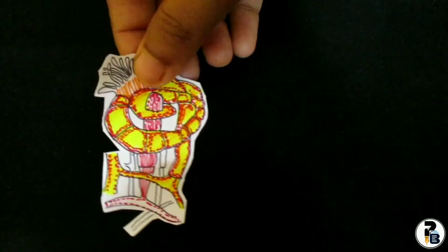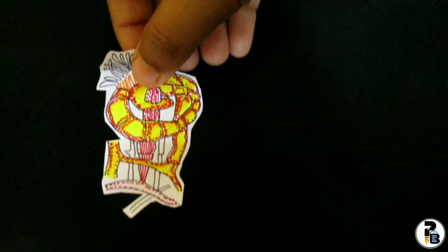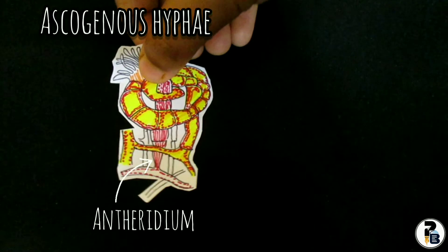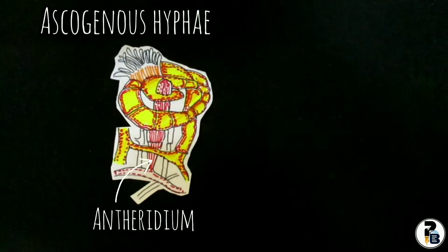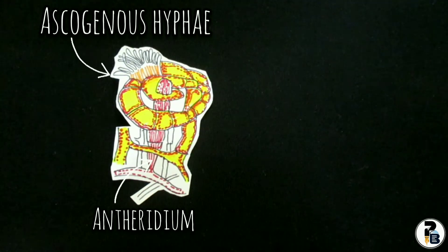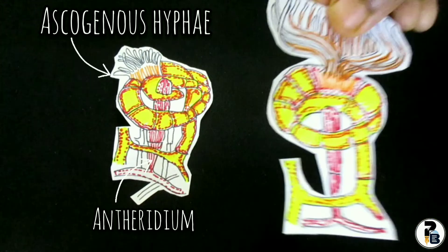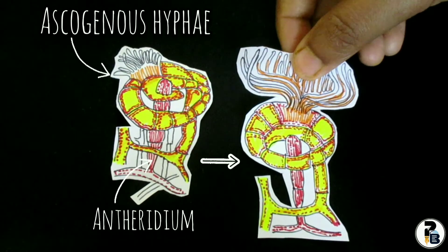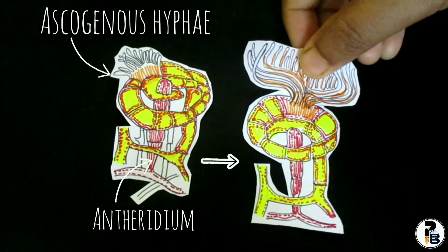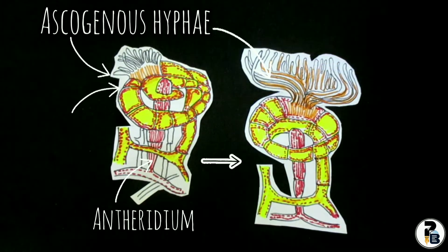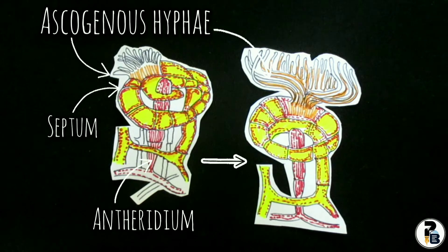At first the trichogyne of the ascogonium elongates rapidly and grows out, coiling twice or thrice around the antheridium. The antheridium and the trichogyne of the ascogonium fuse with each other at or near the apices. When both the sex organs are fully developed, a passage is established between the antheridium and the tip cell of the trichogyne by dissolution of walls at the point of contact. The male nuclei begin to leave the antheridium and gradually move from cell to cell through the perforated septa of the trichogyne, and finally pair with female nuclei in the oogonium.